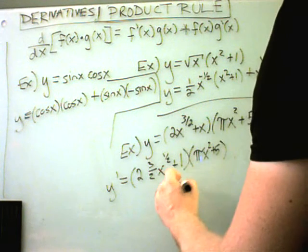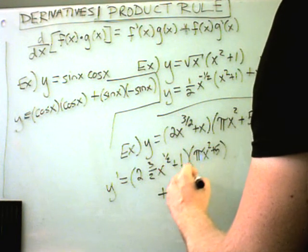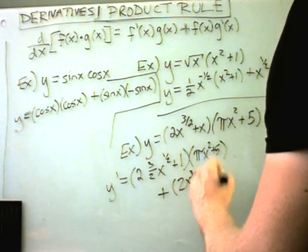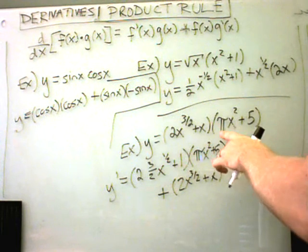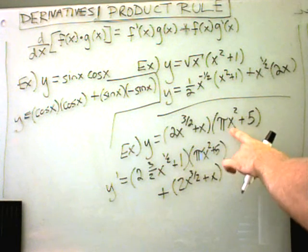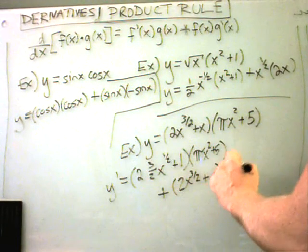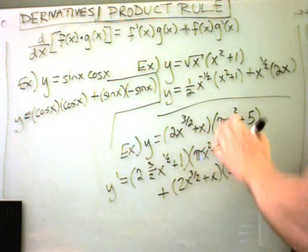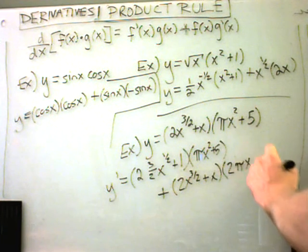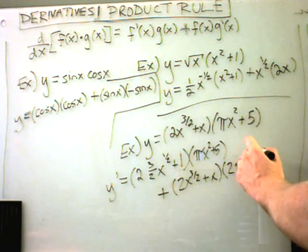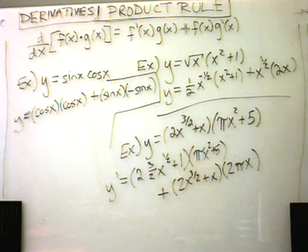And let me drop it down here so I don't run out of room. Now I'm going to leave the original 2x to the three halves alone plus x. And again, pi is just a number. So when I take the derivative of x squared, the two will come out front. I'll get two times pi. I'll take one away from the power. That'll give me x to the first. And the derivative of positive five is just zero. So we can close off our parentheses. And we'll be done.